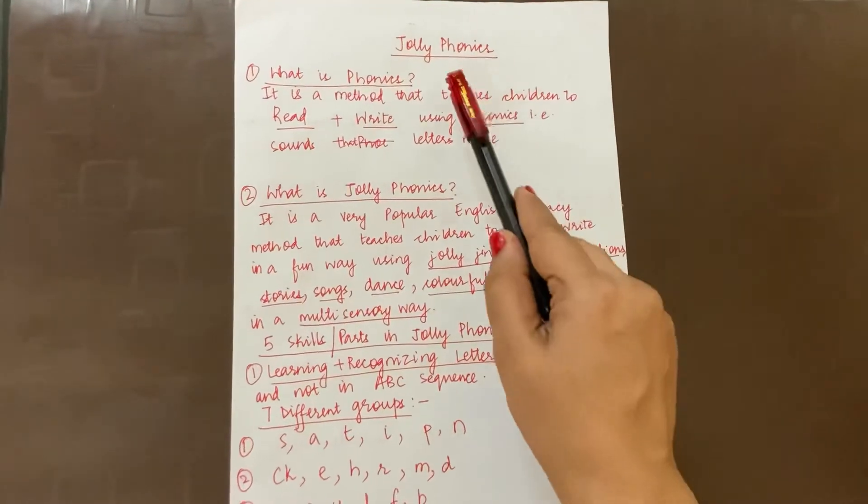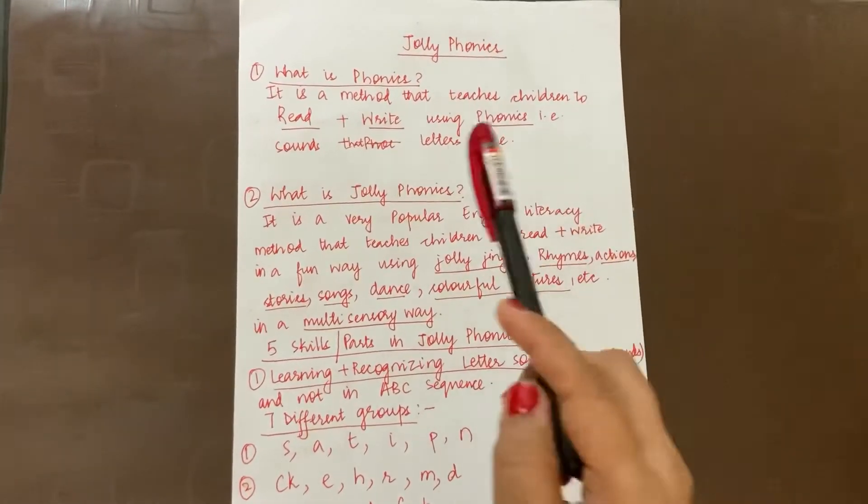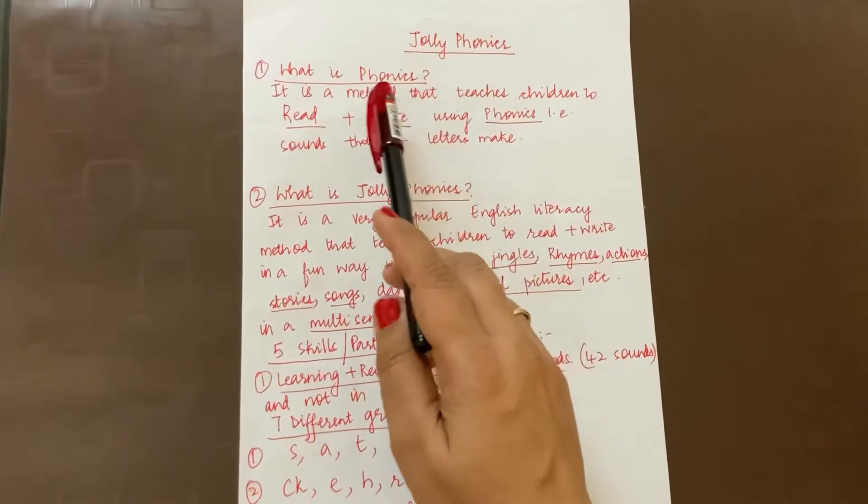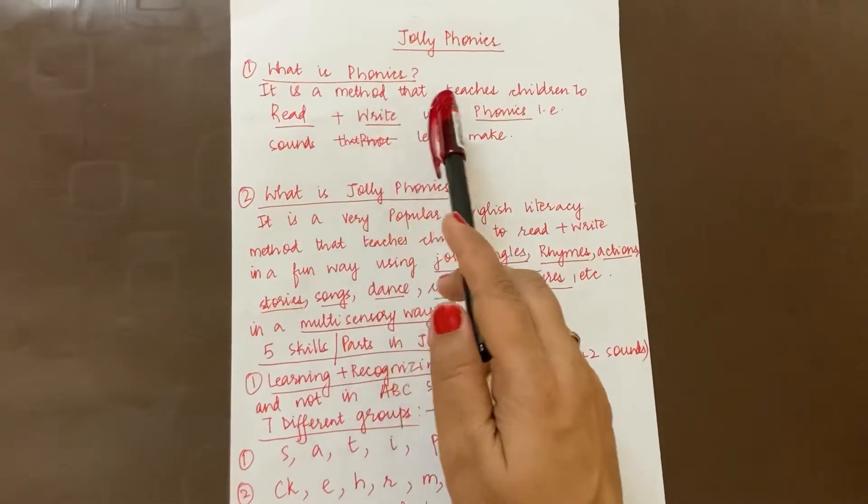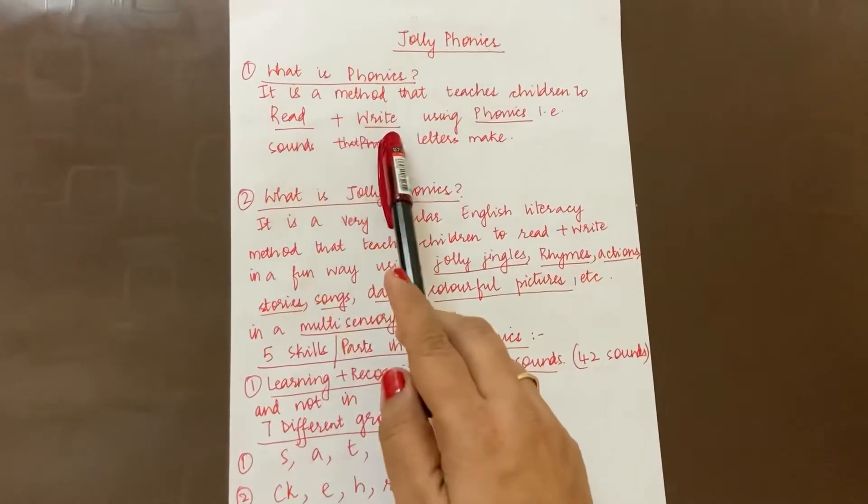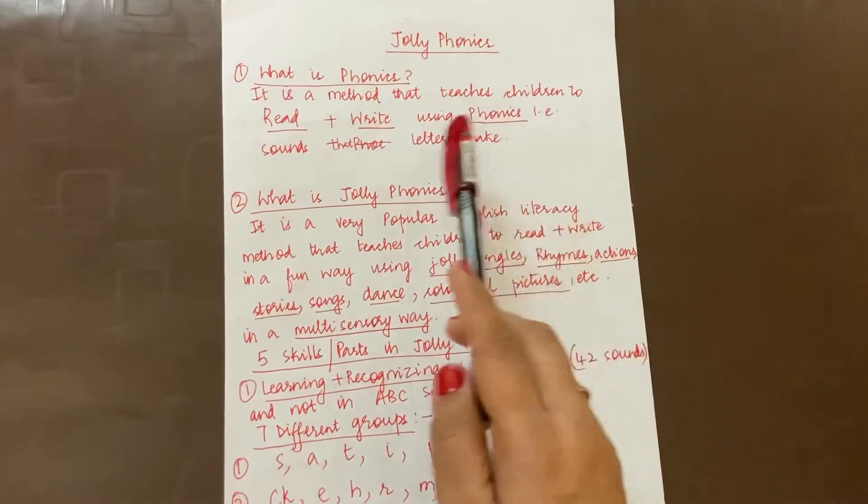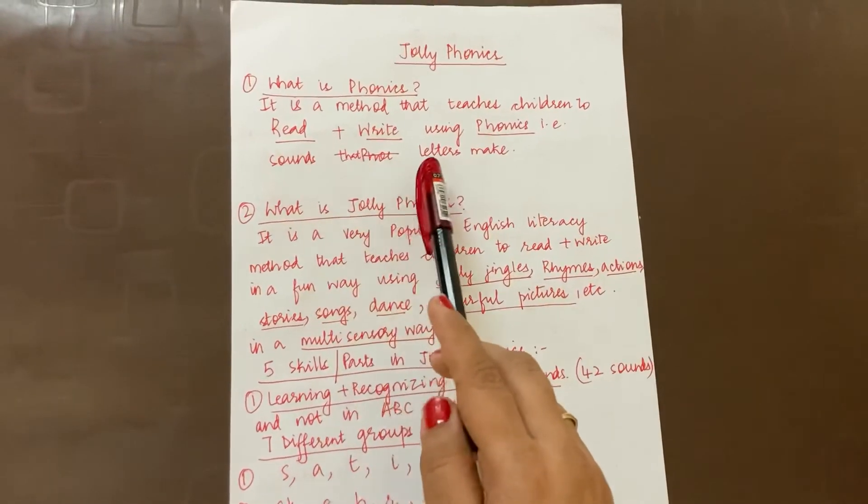Today we'll be talking about a very important topic for junior KG and senior KG kids, that is phonics. So we'll start with Jolly Phonics. So first of all, what is phonics? It is a method that teaches children to read and write using phonics, that is sounds that the letters make.